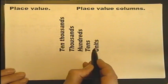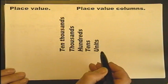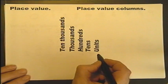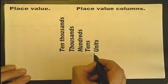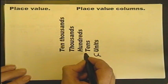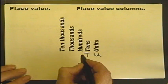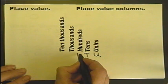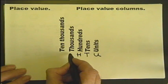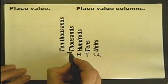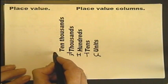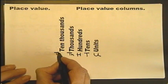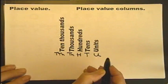We can abbreviate these columns, in other words write them shorter, by just using some letters. So instead of units, we can write just the letter U. Tens, the letter T. Hundreds, the letter H. Thousands, the letter T and an H. And tens of thousands, well we'll have to do it something like this: T, T, and an H.